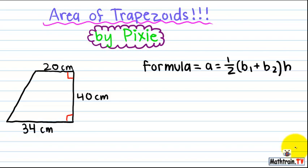The first thing that we're going to want to remember is that the formula for finding the area of a trapezoid is area equals one-half times base one plus base two times h.